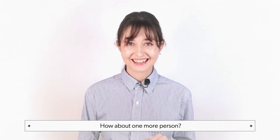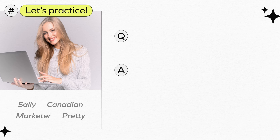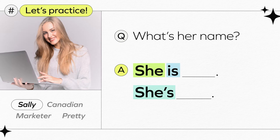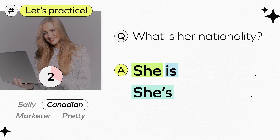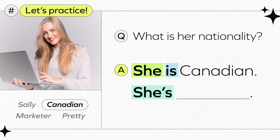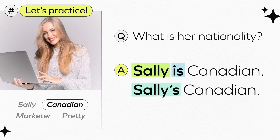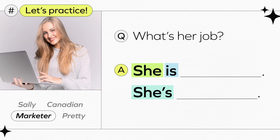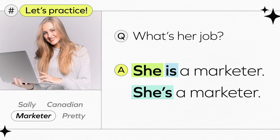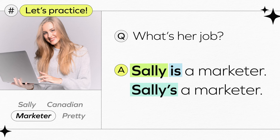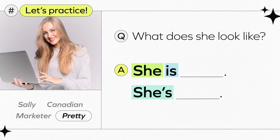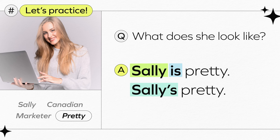How about one more person? Last practice. Look at the picture and keywords and answer the questions using the keywords. What's her name? She is Sally, or she's Sally. What is her nationality? She is Canadian. She's Canadian. Or, Sally is Canadian — Sally's Canadian. What's her job? She is a marketer. She's a marketer. Or, Sally is a marketer — Sally's a marketer. What does she look like? She is pretty. She's pretty. Or, Sally is pretty — Sally's pretty.